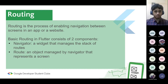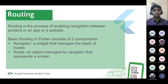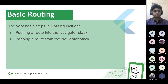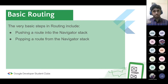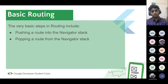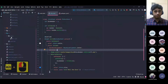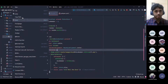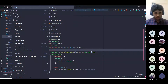Routing in Flutter consists of two important components. First is Navigator, which manages a stack of routes. A Route is an object that represents a screen — any screen in a Flutter app is a route. Navigator manages this stack. We can push a route onto the Navigator stack and pop a route from it. This is a last-in first-out concept: we push screens on top of each other, and when going back they get popped off.